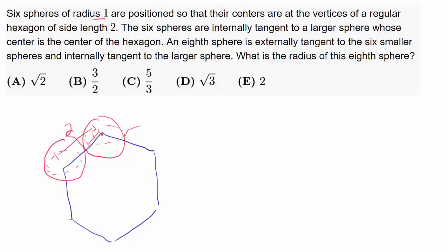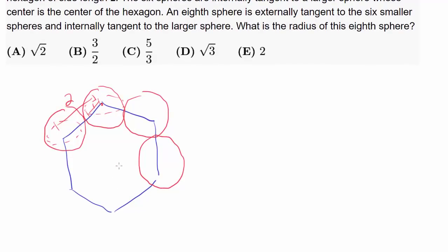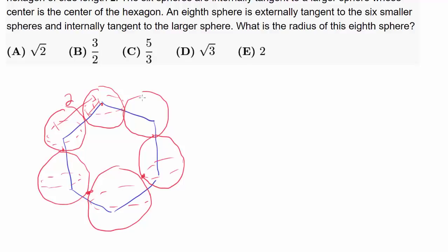Here is the second sphere, and we have the third one, the fourth one, and going down below, the fifth one and the sixth one. Of course, all of them are tangent to their neighbors at one point. Let me make sure these look more three-dimensional — so that's what we have.